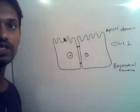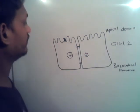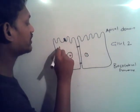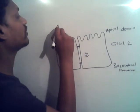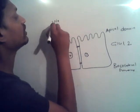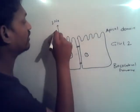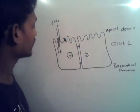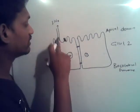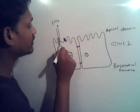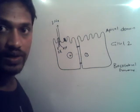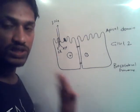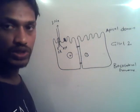Usually, there is glucose present inside the epithelial cell. Here in the epithelial cell, via primary active transport, the cell pumps 3 sodium ions out and 2 potassium ions inside the cell. The concentration of sodium is maximum outside the cell.